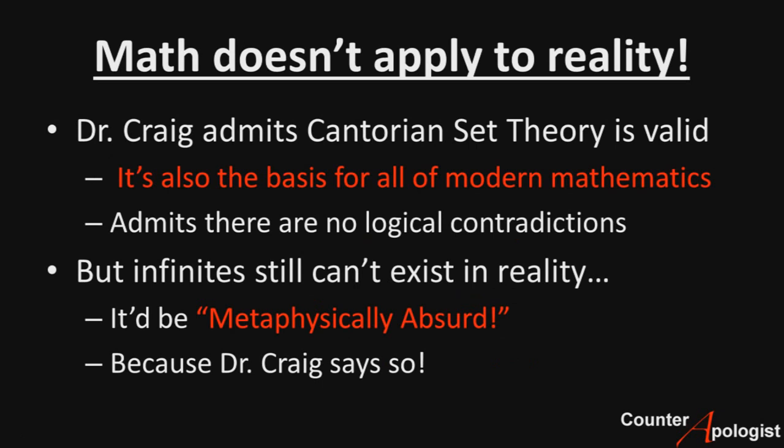Now, Craig is smart enough to avoid trying to disprove something as well-established as Cantorian set theory, and he will actually admit that there's no logical contradiction involved in his examples. But then he makes this really odd move in saying that while Cantorian set theory is consistent, it kind of only works on paper or as a concept in your mind, and that infinity still couldn't exist in the real world. There's a great paper by a guy named Josh Denver, linked in the description, that shows just how outrageous it is to claim that a branch of well-defined mathematics is valid but doesn't apply to reality.